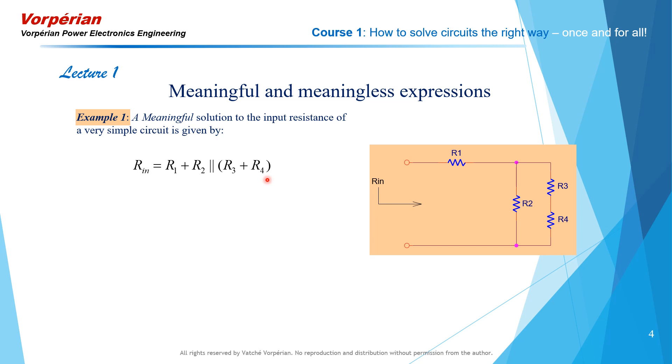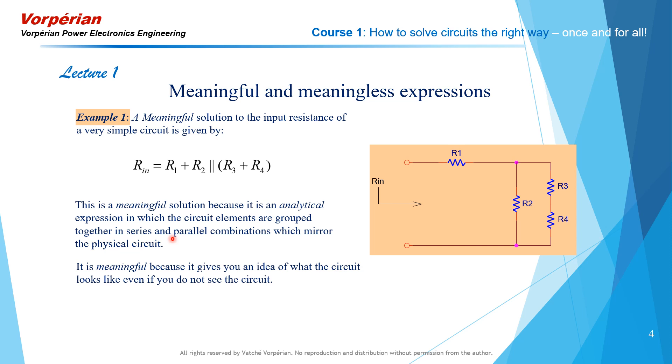This is a meaningful solution because it is an analytical expression in which the circuit elements are grouped together in series and parallel combinations which mirror the physical circuit. It is also meaningful because it gives you an idea what the circuit looks like even if you did not see the circuit. I have a pretty good idea what is going on inside it, how the various elements are interconnected, and how they contribute to Rn.